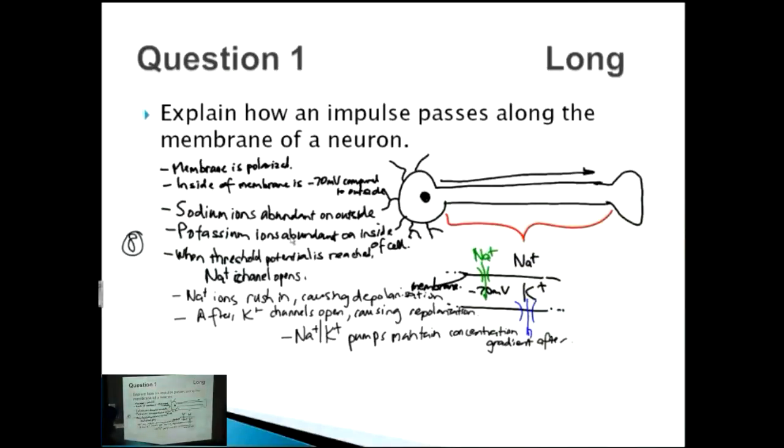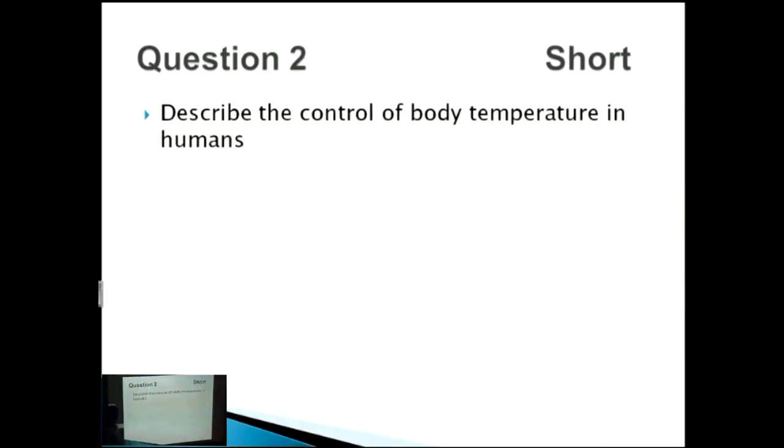Question number two: Describe the control of body temperature in humans. This is a short question. It's pretty easy. When it comes to these parameters, you always need to think of negative feedback.